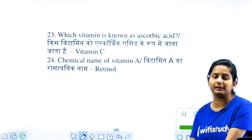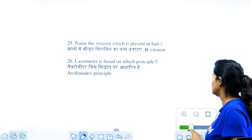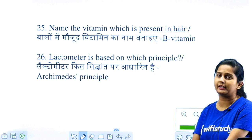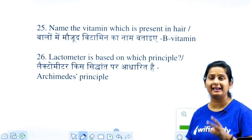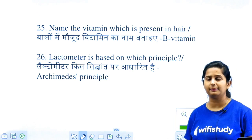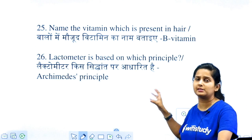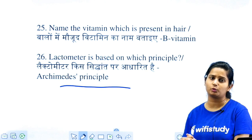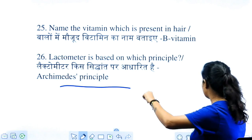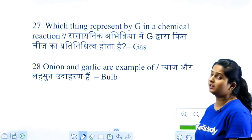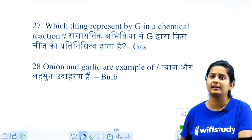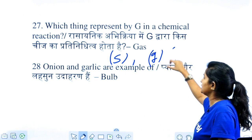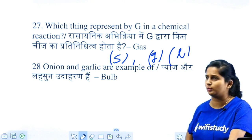Which vitamin is called ascorbic acid? Vitamin C. What is the chemical name of vitamin A? Remember: retinol is the chemical name of vitamin A. Which vitamin is in our hair? Vitamin B — if your body is deficient in it, hair and nail growth is poor. Lactometer is based on Archimedes' principle. In chemical reactions, G represents gas, S represents solid, and L represents liquid.